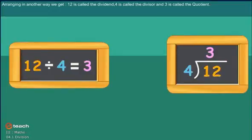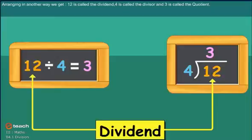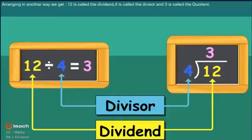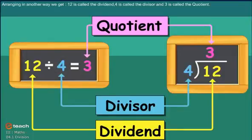12 is called the dividend. 4 is called the divisor. 3 is called the quotient.